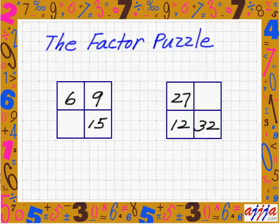Usually I'm looking at 6, 9, and 9, 15. So I look at this 9 first. 9 means 3 times 3. So probably 3 and 3.